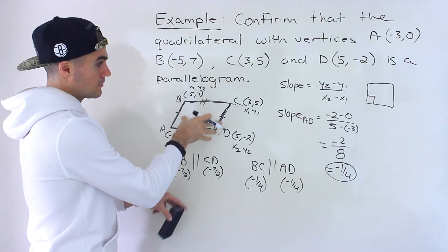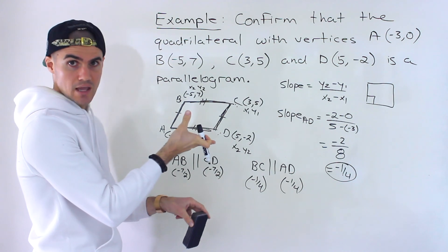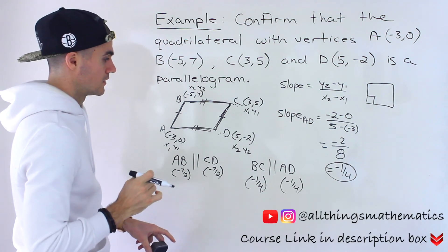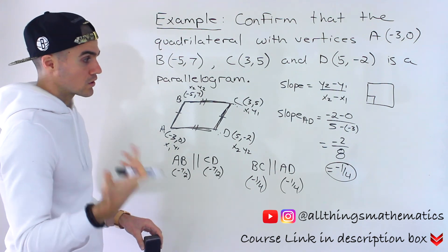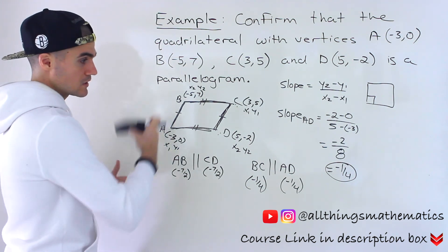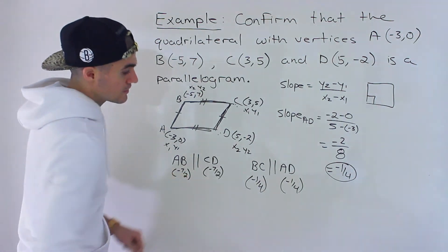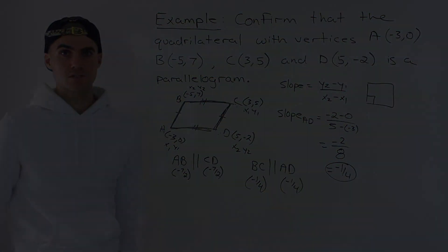It's a parallelogram. A rectangle is actually just a specific case of a parallelogram. Okay, but just giving you a heads up that if you were to show that it's a rectangle, you would do the exact same thing. But then you'd also have to show that the slopes are negative reciprocals.